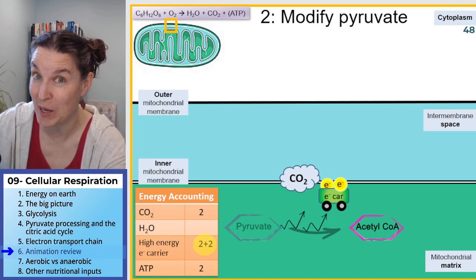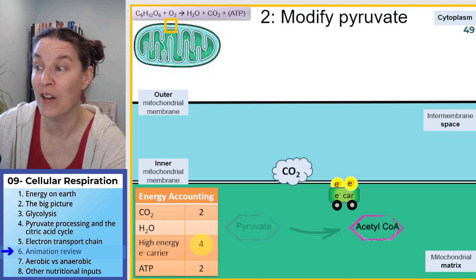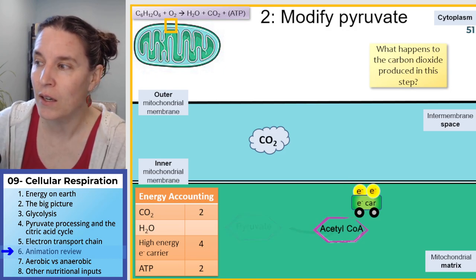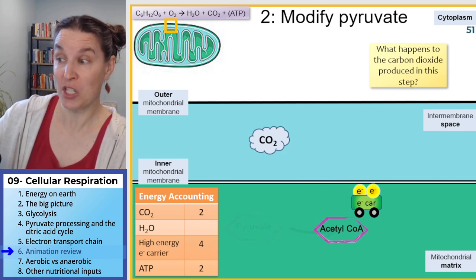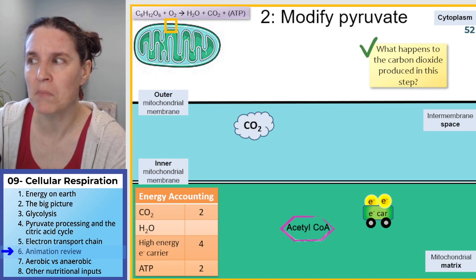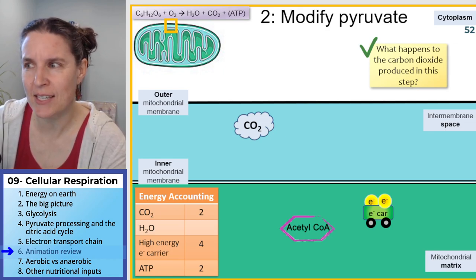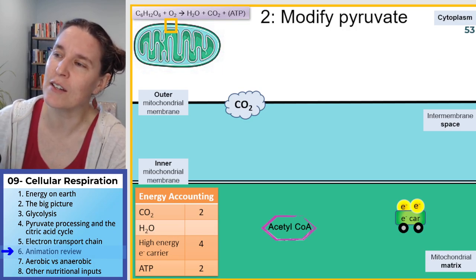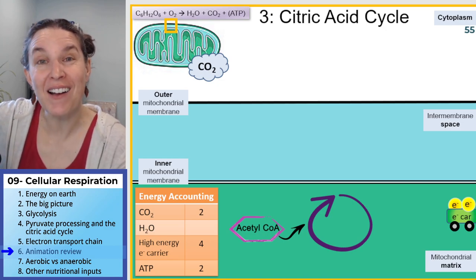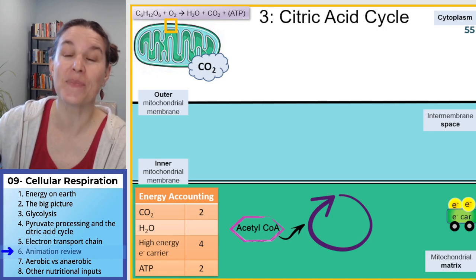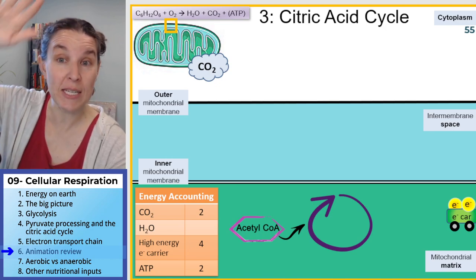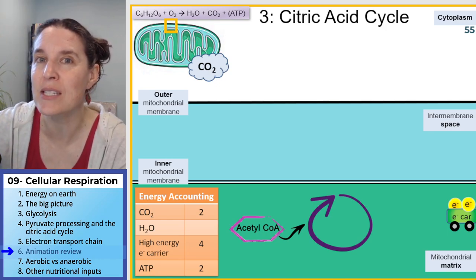So now we have two more electron carriers, giving us a total of four high-energy electron carriers. Where are they going? To the electron transport chain. Where is the carbon dioxide going? It's being breathed out. Meanwhile, the acetyl-CoA is entering the citric acid cycle.